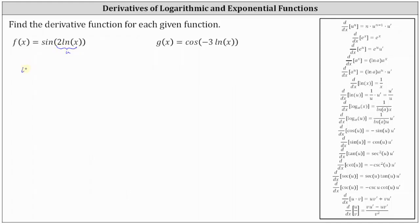So if the inner function u is equal to two natural log x, we know we need to determine u prime when applying the chain rule, where u prime is the derivative of two natural log x with respect to x. Therefore u prime is equal to two times one divided by x, giving us u prime equals two divided by x.